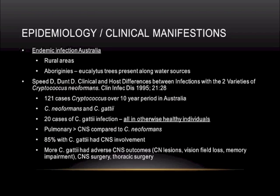There was a higher percentage of pulmonary infections compared to neoformans, although both have a very high percentage with CNS disease. The gattii-infected patients had worse outcomes, largely because of the higher likelihood to form large or multiple cryptococcomas. They tended to see more CNS symptoms including vision loss, cranial nerve palsies, and memory impairment. Because of obstructive reasons, they required more CNS surgery, and when lesions were seen in the lung, more often required thoracic surgery.